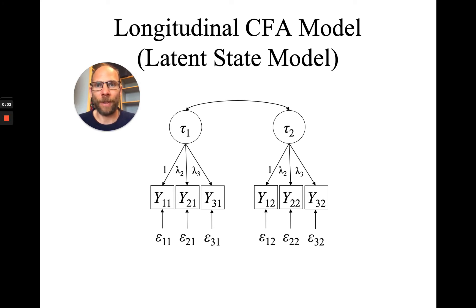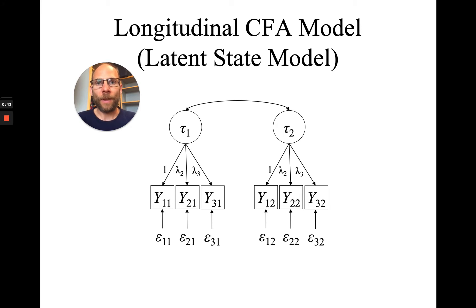In this video, I want to talk about the relationship between conventional longitudinal confirmatory factor models and so-called latent state trait models. Here you can see a conventional longitudinal confirmatory factor analysis model that in latent state trait theory we would also call a latent state model or a multi-state model. This model simply specifies a separate factor at each time point, using the same set of indicators at multiple time points. At each time point you have a latent factor representing the true scores for a set of indicators. The latent state factors can be correlated across time, and that correlation can be used to assess the stability of individual differences across time. Models like this are very commonly used to analyze longitudinal data.